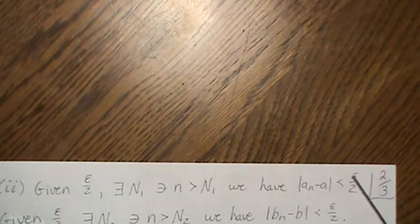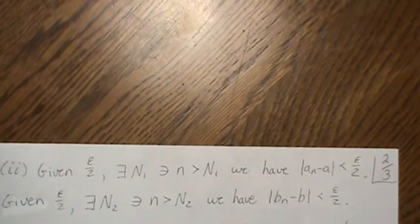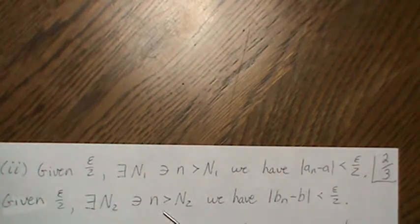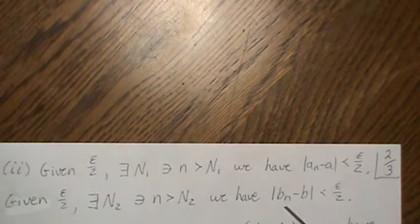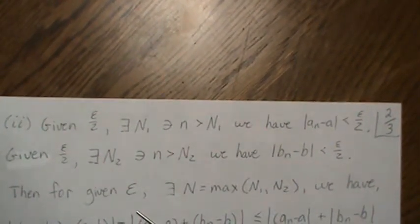For part two, for a given epsilon over two, there exists an N1 such that for all n greater than N1, we have that |(An) − A| is less than epsilon over two. We know that because An is a convergent sequence. Similarly, given epsilon over two, there exists an N2 such that for n greater than N2, |Bn − B| is less than epsilon over two. That's true because Bn is a convergent sequence to B. So for a given epsilon, there exists an N — let N be the maximum of N1 and N2.